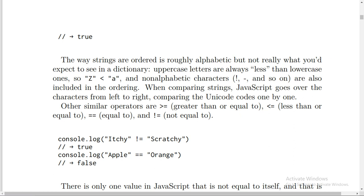Other similar operators are >= (greater than or equal), <= (less than or equal), == (equal to), and != (not equal to). Console.log("Itchy" != "Scratchy"). It's true. Console.log("Apple" == "Orange"). It's false.